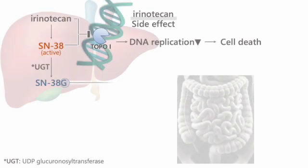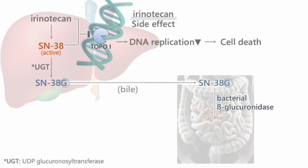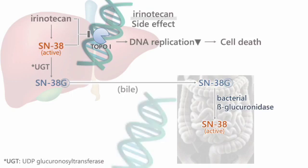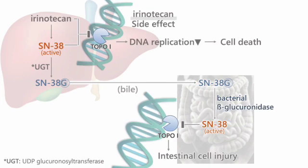The detoxified SN38 glucuronic acid in the liver is stripped of its glucuronic acid conjugation by intestinal bacteria, returning to its active form as SN38. This reactivated SN38 then exerts its topoisomerase inhibition, impairing the intestine, which leads to delayed onset diarrhea.